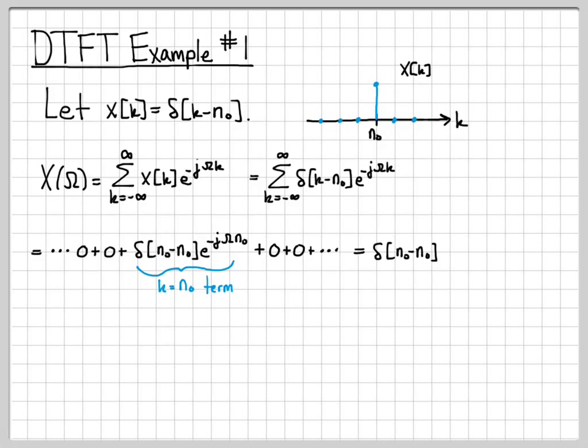So that simplifies, that whole sum simplifies to delta of n minus n naught times e to the minus j omega n naught. But we know what delta of n naught minus n naught is, n naught minus n naught is zero. Delta of zero by definition is one, so it turns into this. And then one times e to the minus j omega n naught is simply e to the minus j omega n naught.